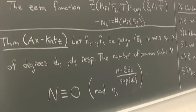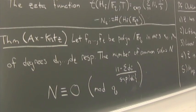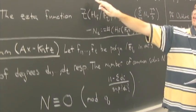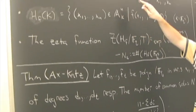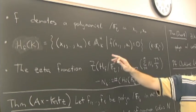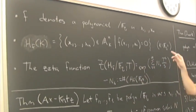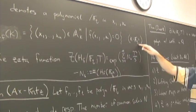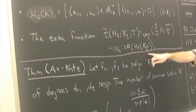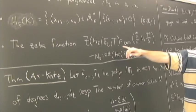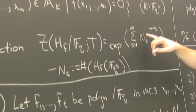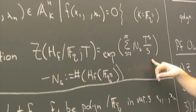Let me back up a little bit. We're going to be talking about F, a polynomial with coefficients in F_Q. We want to look at the hypersurface given by the zeros of F — tuples of points in F_{Q^S} that give a solution to the polynomial. We count these as N_S. The zeta function is the exponential of the power series with coefficients N_S/S.